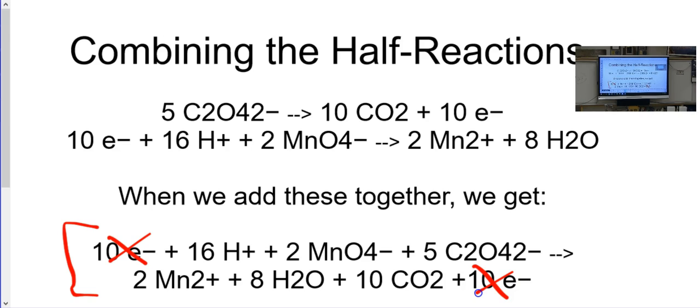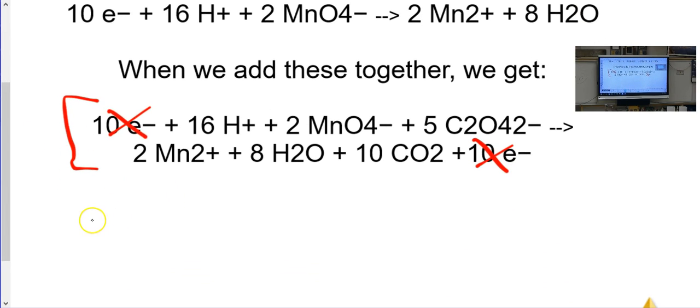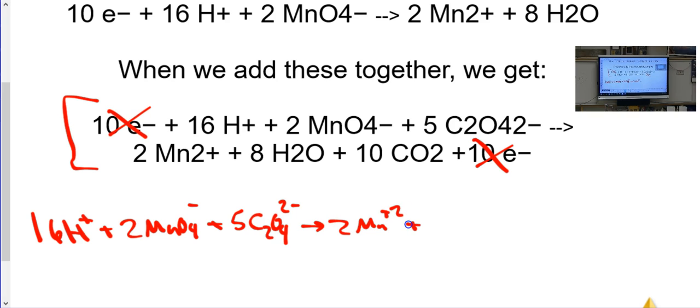All right. The final step is to cross out anything or reduce some things. Like, there isn't one. But in the top, if there was like six waters, you would reduce it to two waters on the right side. But the only thing here we can cancel out is our electrons, right? So, the overall balanced reaction for this would be 16H plus, plus 2MnO4-, plus 5C2O42-, goes to 2Mn plus 2. I keep doing that whenever I go, plus 8H2O, plus 10CO2, and we're done.